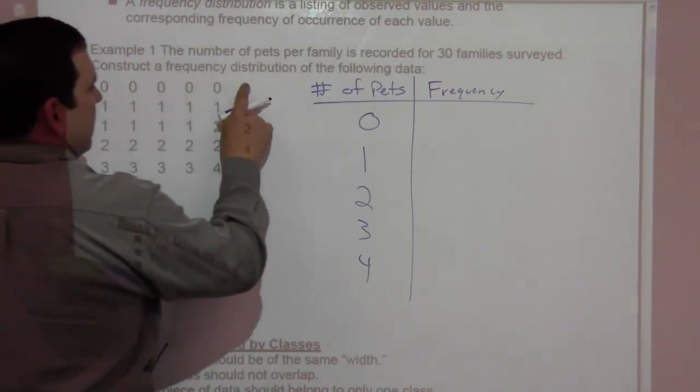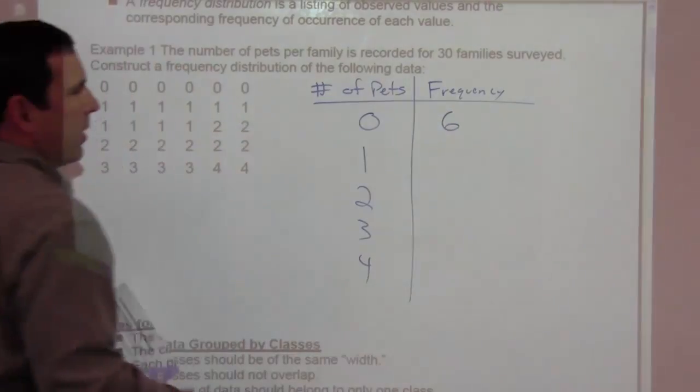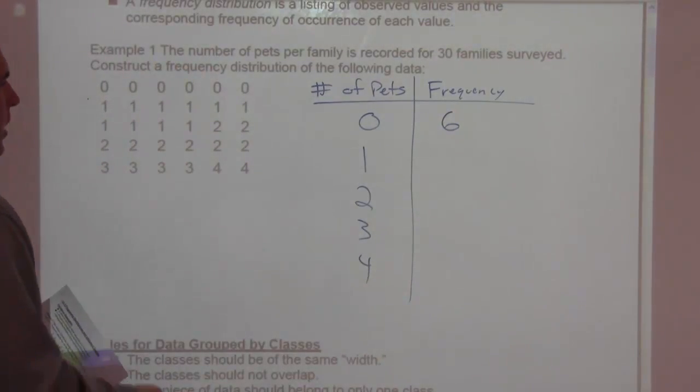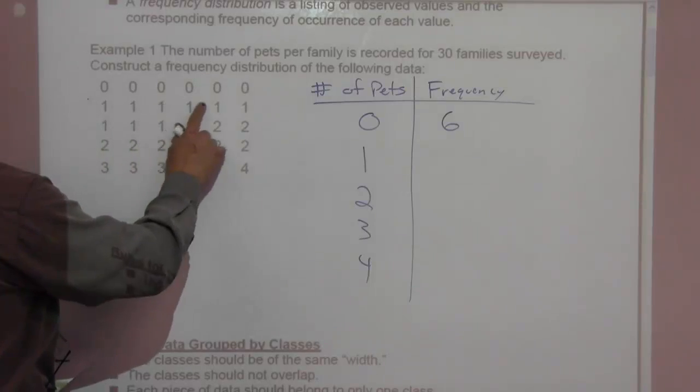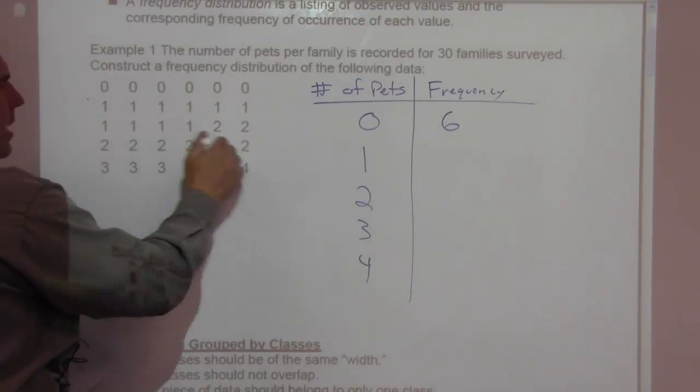We have one, two, three, four, five, six. Six people have zero pets and they save a lot of money that way. One, two, three, four, five, six, seven, eight, nine, ten.